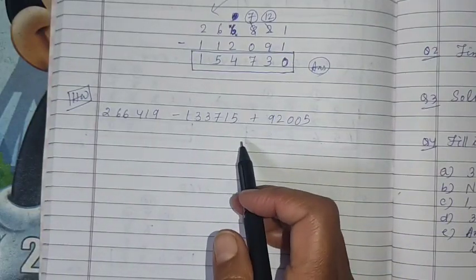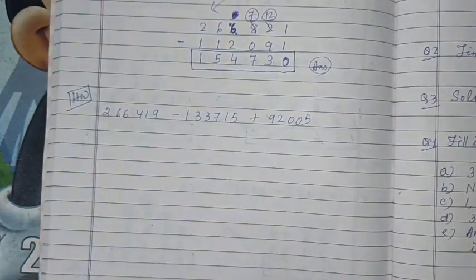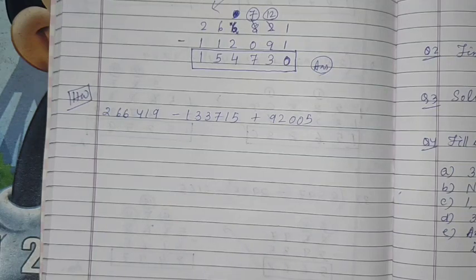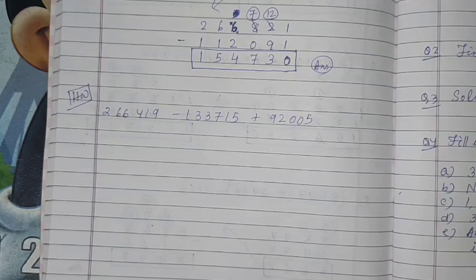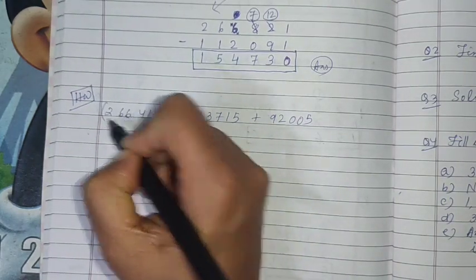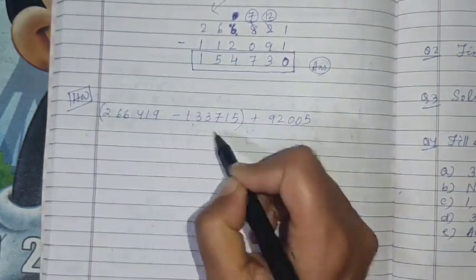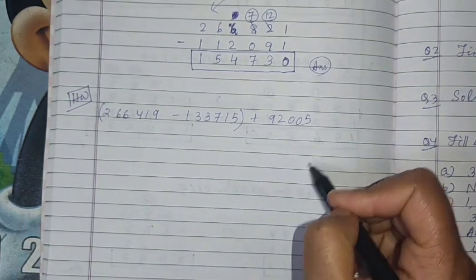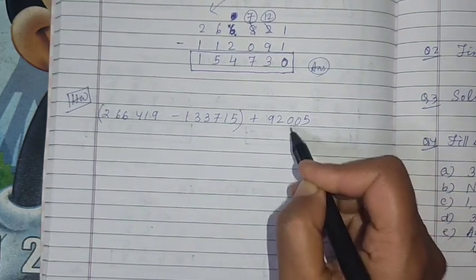Next question is for your homework. You do 2,66,419 minus 1,33,715 plus 92,005. First you will have to take these two numbers, then do the subtraction, find the difference. Now that difference you write plus this third number, then you get the sum.